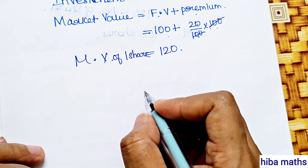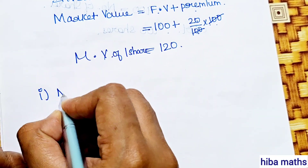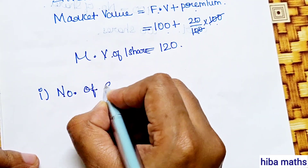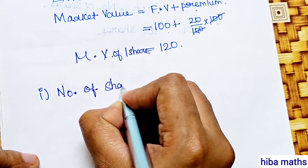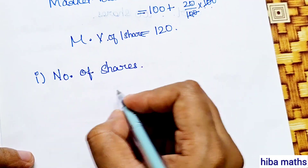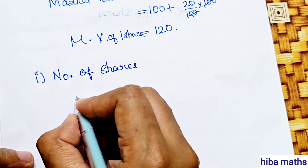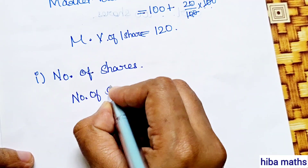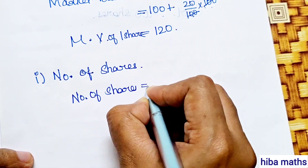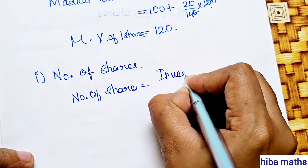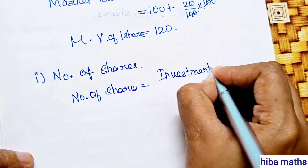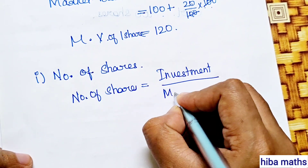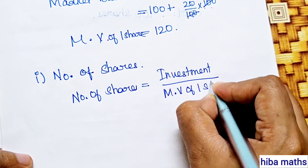Now, the first part: number of shares bought. Number of shares equals investment divided by market value of 1 share, which is 29,040 divided by 120.